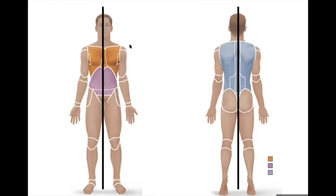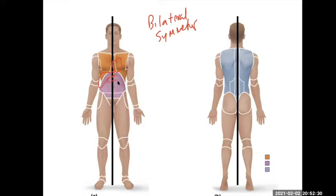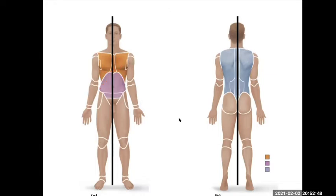This is called bilateral symmetry — on the surface at least, your left and right sides are mirror images of each other. That's not true internally, because your heart's a little to the side, your liver is a bit on your right side, your stomach's here, and you have a spleen over here. So internally they're not bilaterally symmetrical, but externally you have a left eye and a right eye, a left half of the nose and a right, and they're roughly mirror images of each other.